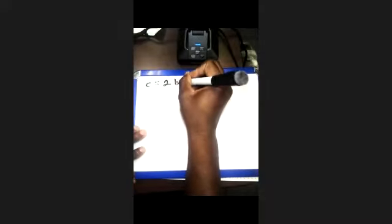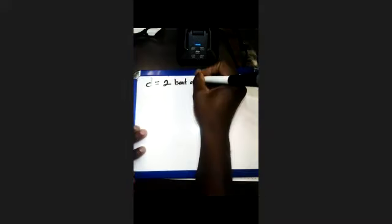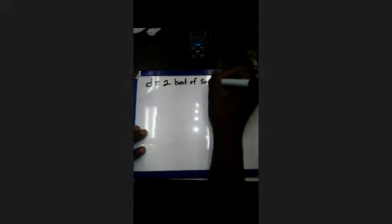We're going to review half notes. A half note is going to look just like a quarter note. The only difference is you've got a line and you've got a circle — it's not shaded in. And remember, a half note equals two beats of sound.